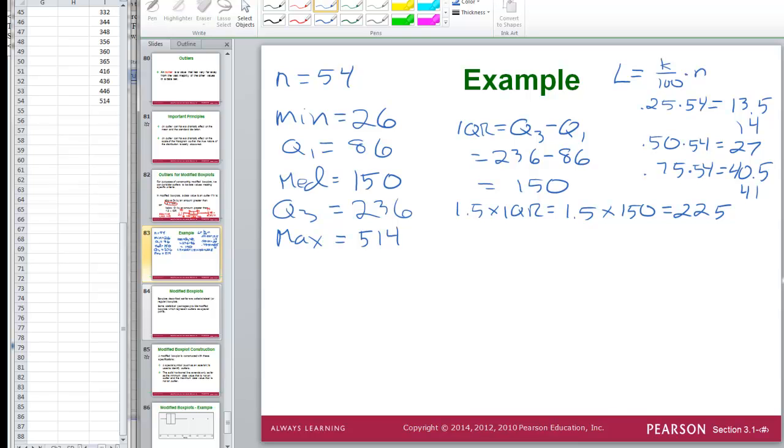So we can draw the box. Remember this is supposed to be on a number line. So we can try and draw it to scale. Q1 is 86. Q3 is 236. Q2 is 150. So that's right about there. It's pretty close to the middle. And it's just a huge coincidence that your median here was the same thing as our IQR.